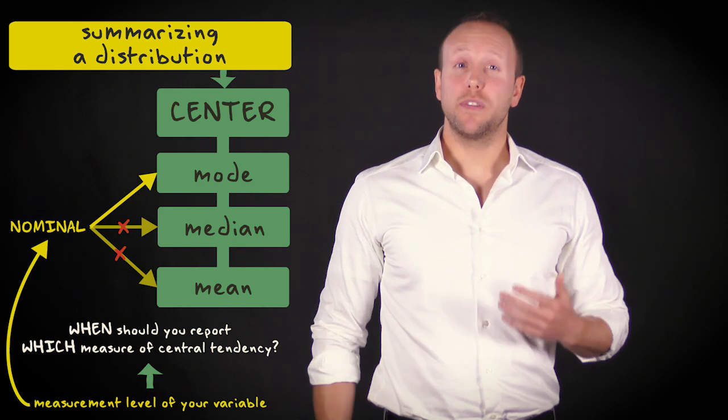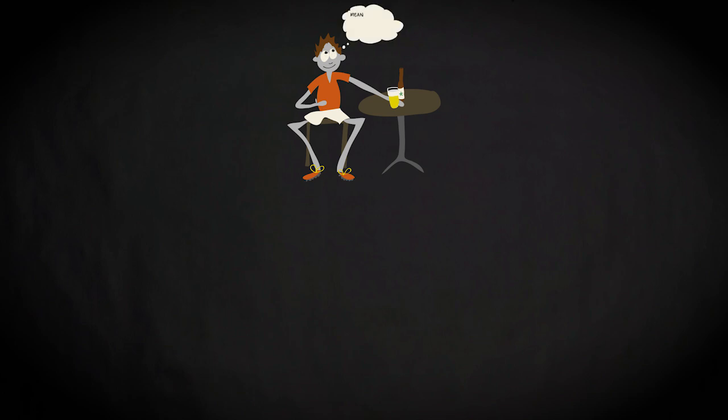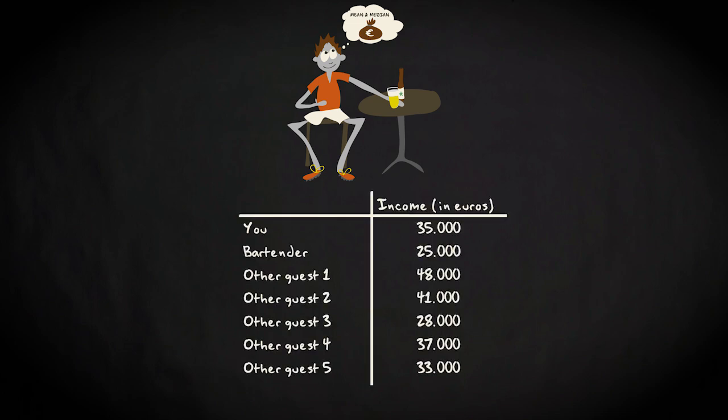But what to do in case of a quantitative variable? Imagine you're sitting in the canteen of a football club in your hometown, and you would like to compute the mean and median income of all persons present. That's you, five other guests, and the bartender. This is the data matrix. The mean is around 35,000. The median is exactly 35,000.